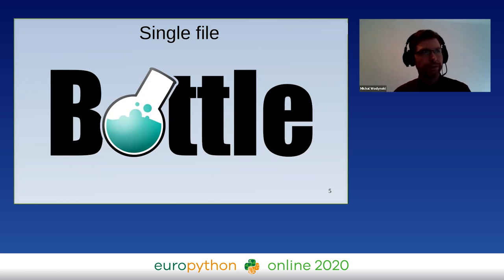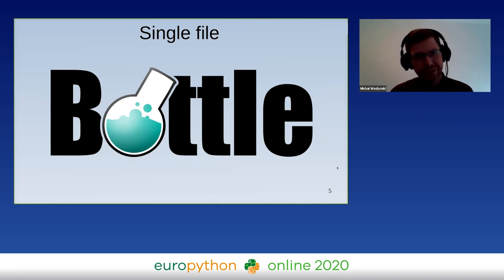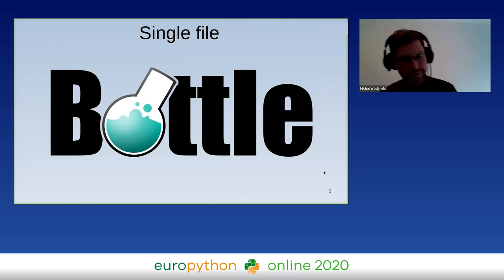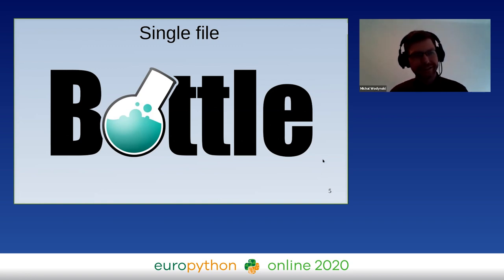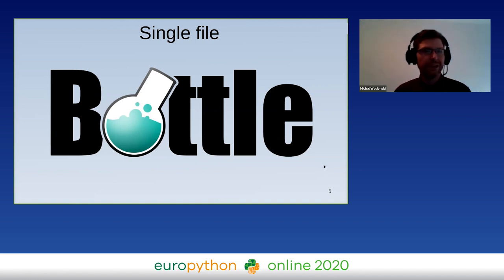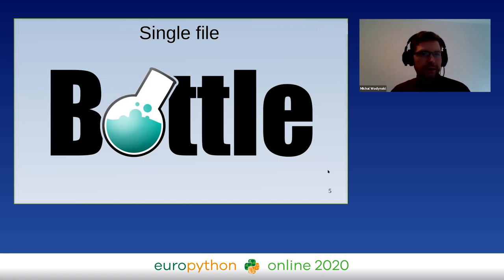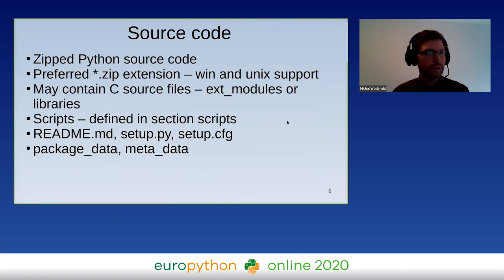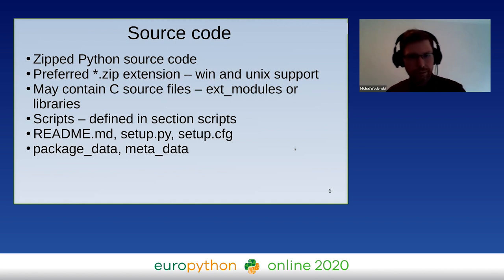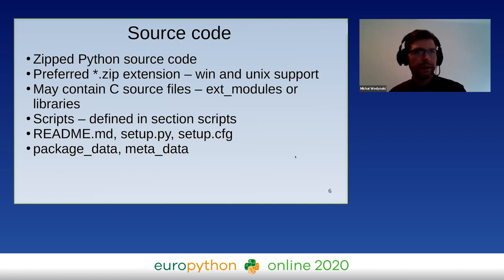We have Python files and can share them between the community. For example, in the Bottle web framework it's possible to create a small web page for deployment and just share the file. But it's not convenient, and we need something more reliable. The first thing that came across is a source distribution — simply an archive containing Python code. It may also contain other source files like C source files for CPython, and we can define scripts that will be available in our terminal.